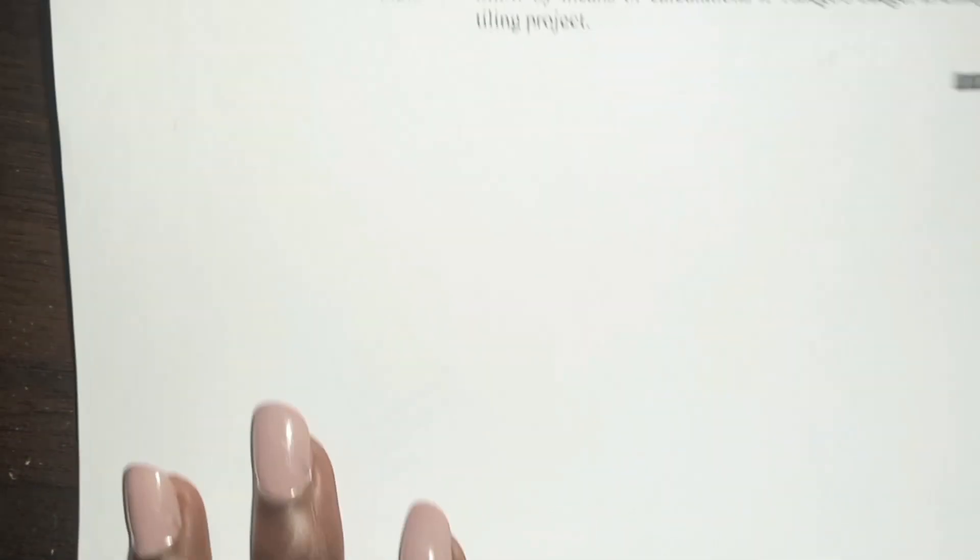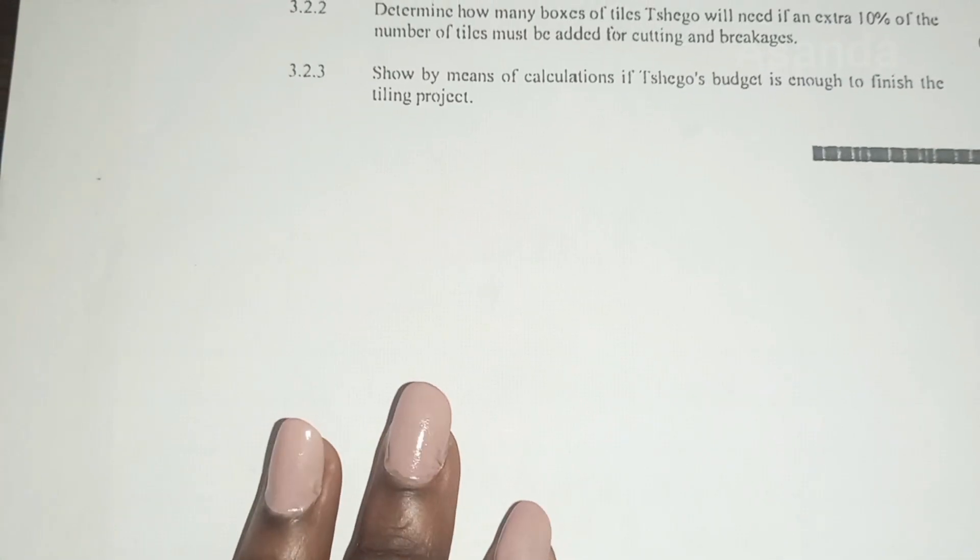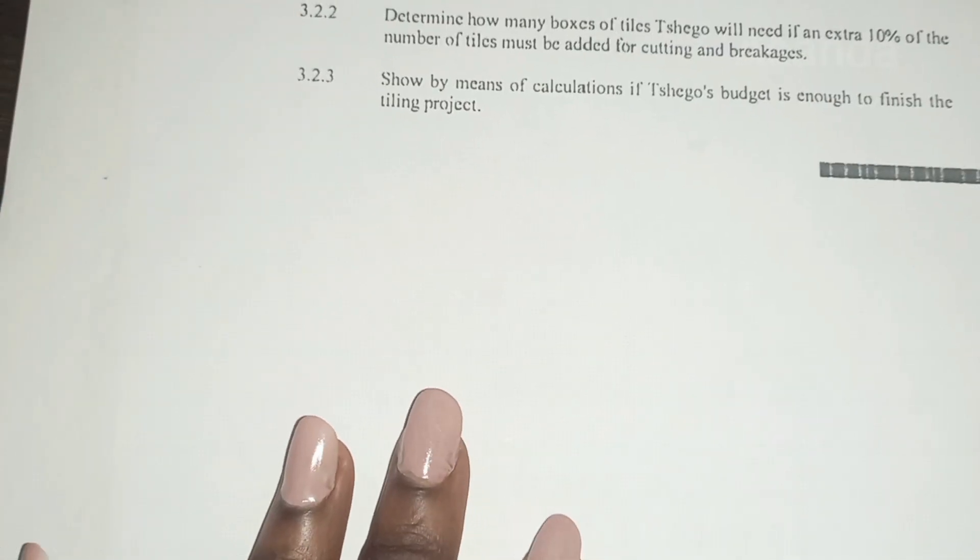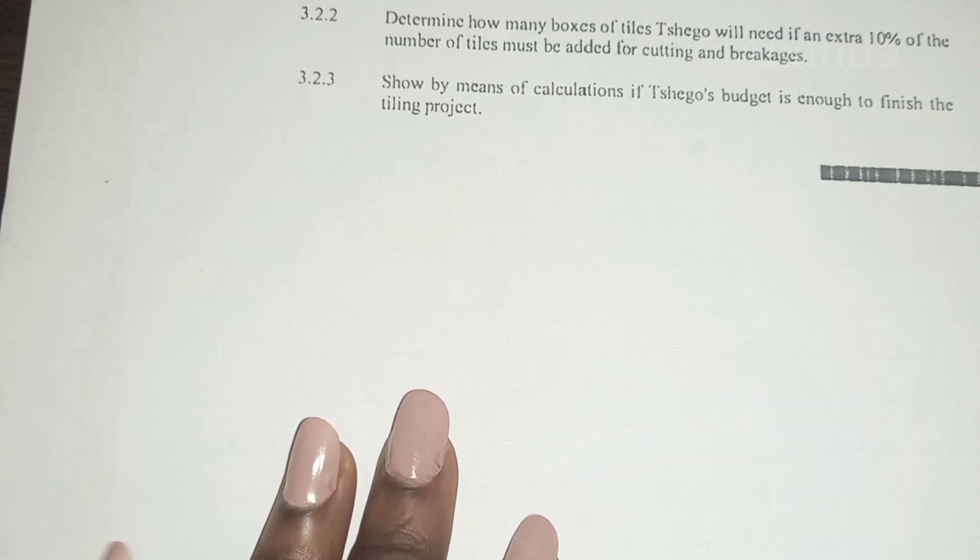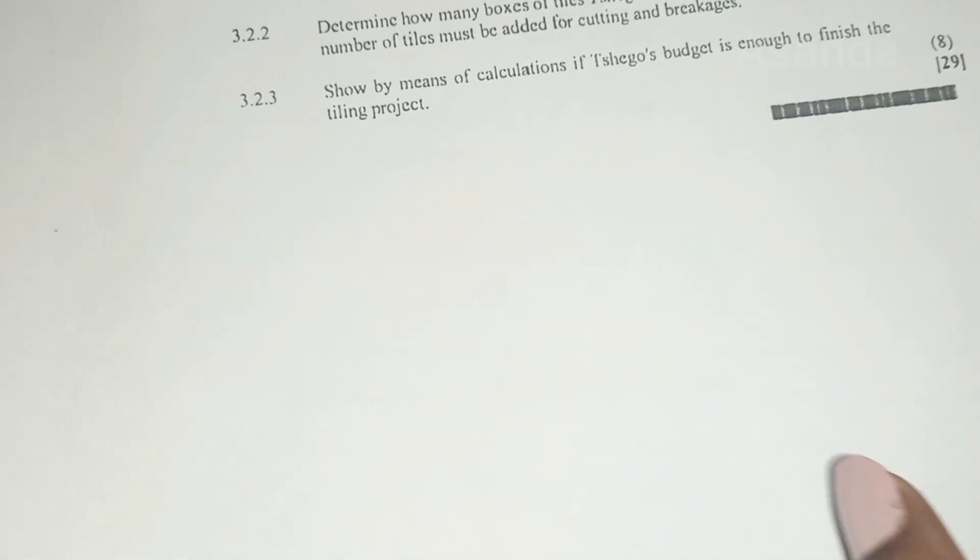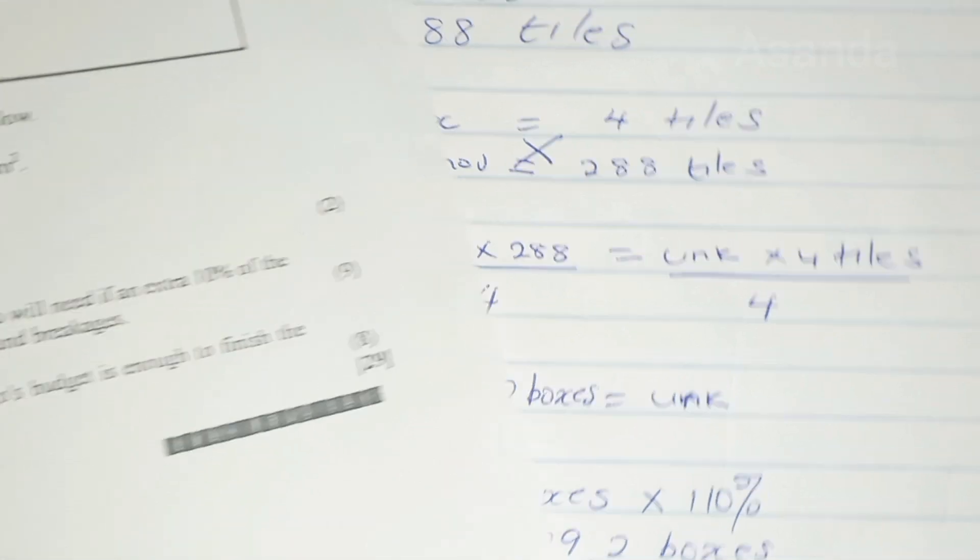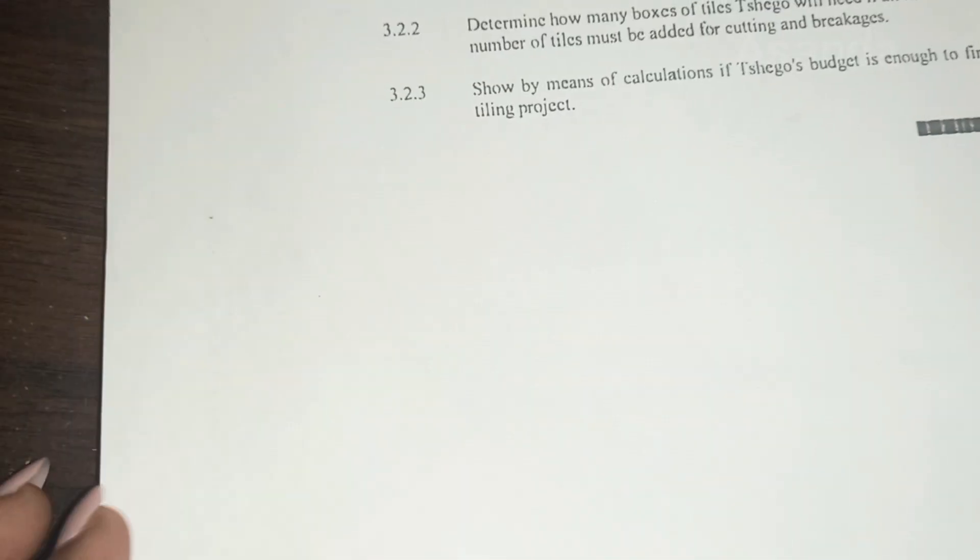We're going to go to 3.2.3. Show by means of calculation if Zecho's budget is enough to finish the tiling project. Okay, so we know how many tiles he's going to use. He's going to use 80 boxes.